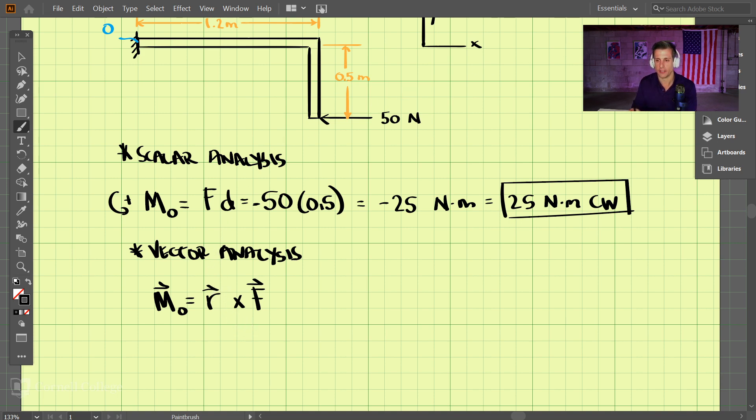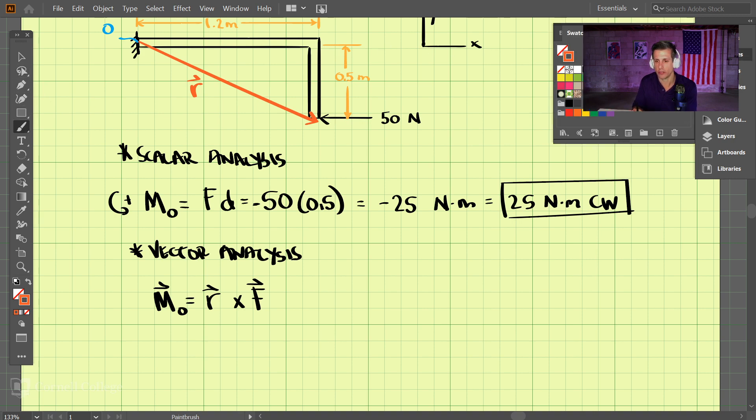Now our R vector goes from here to there, and we have our F vector. Let's write these both in Cartesian coordinate notation.